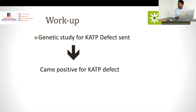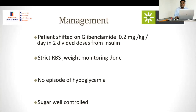Neonatal diabetes is one of the most challenging forms — along with lipodystrophy. Start with basal insulin and titrate, since you don't know how much the child will feed or how much sugars will rise. Genetic study for potassium ATP-ase channel defects came positive. Management shifted from insulin — gradually tapering — to glibenclamide, a sulfonylurea, at a starting dose of 0.2 mg per kg per day in two divided doses, with strict RBS and weight monitoring.